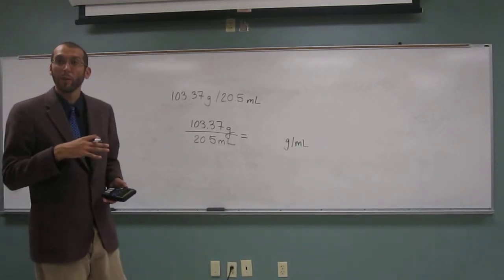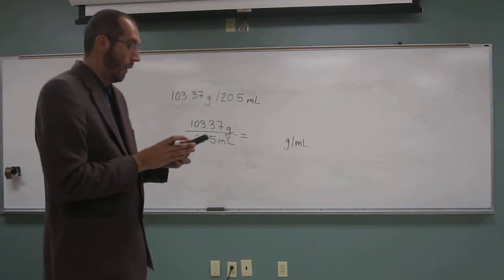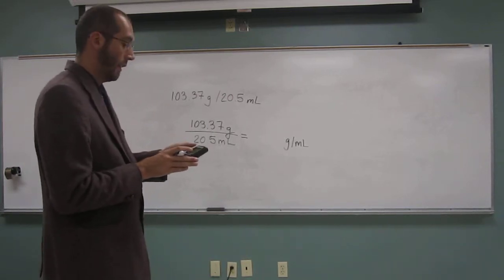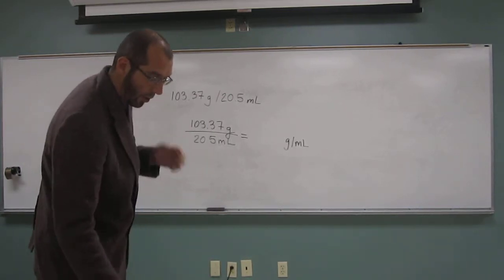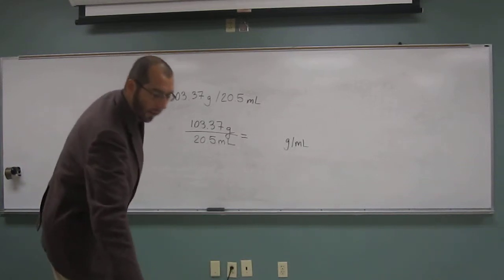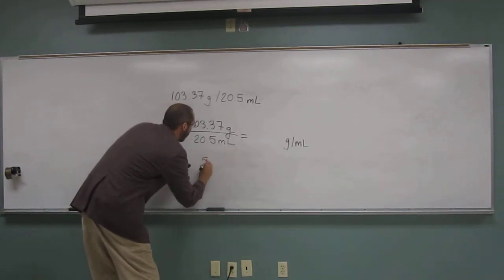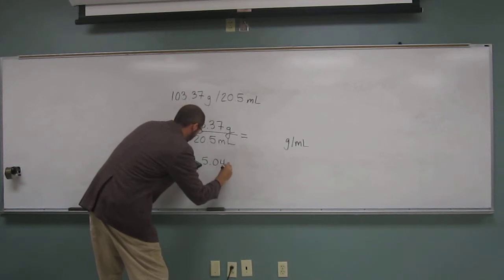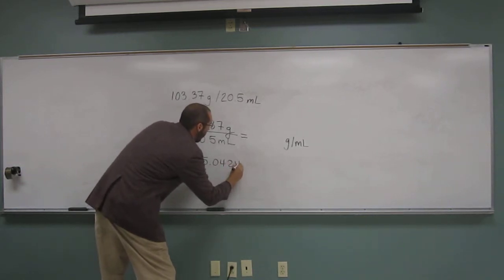So if I do that, remember that's incorrect. So we've got to go to three sig figs and round. So I'm going to show you what the calculator says. So 5.0424.